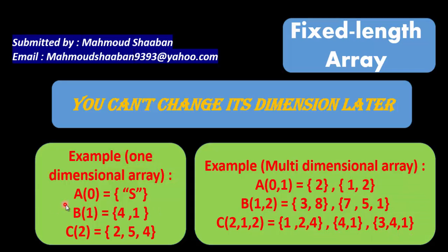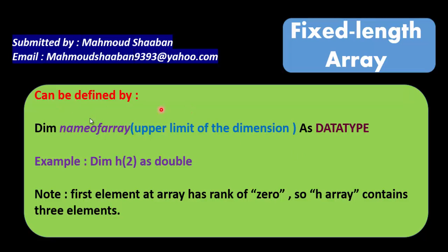So h(0) means index zero, h(1) is index one, and so on. For example, h(0) equals zero, h(1) equals five, and h(2) equals four. This is the first option to define an array.